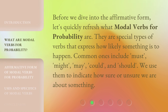Before we dive into the affirmative form, let's quickly refresh what modal verbs for probability are. They are special types of verbs that express how likely something is to happen. Common ones include: must, might, may, could, and should. We use them to indicate how sure or unsure we are about something.